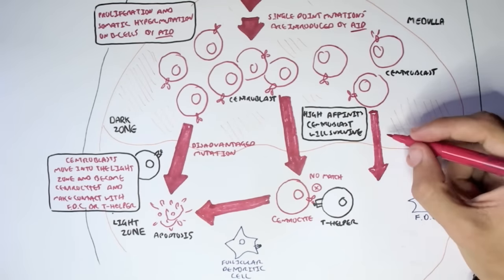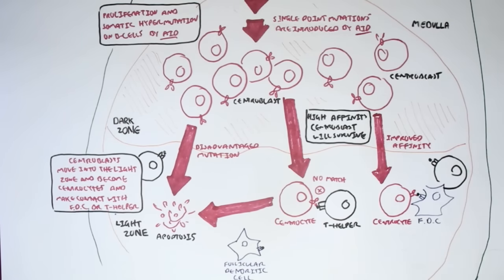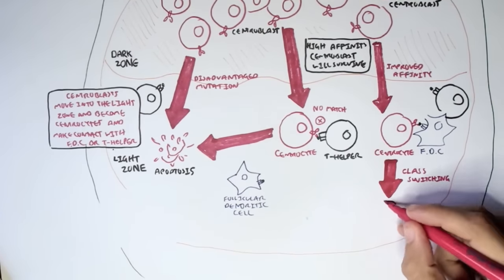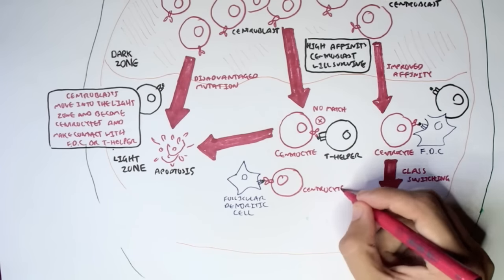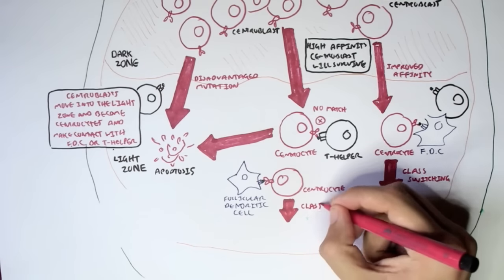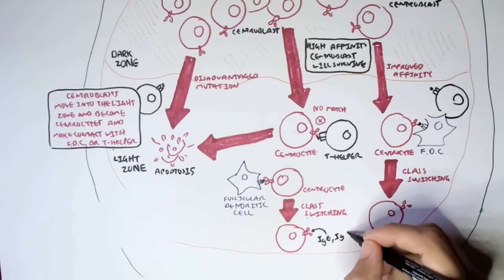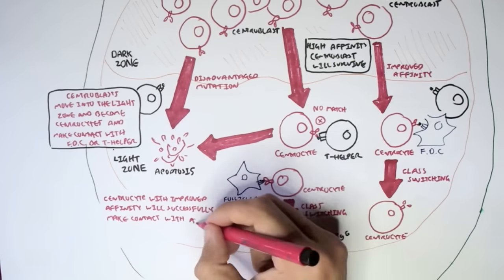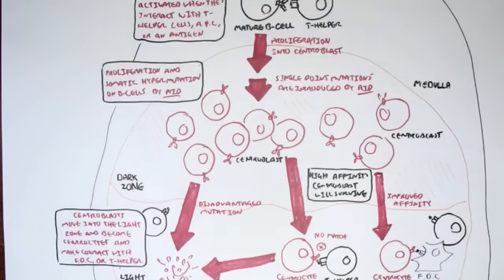However, a centroblast that had improved affinity through hypermutation — the antibody of this centrocyte can recognize the antigen presented by the follicular dendritic cell. Because the centrocyte's antibody recognizes the antigen, the body would want this centrocyte to survive. So the centrocyte will undergo class switching, where its antibody changes class — for example, from IgM to IgA. Similarly, another centrocyte that recognizes the antigen will undergo class switching from IgD or IgM to IgE or IgG. Centrocytes with improved affinity successfully make contact with an antigen and then class switch to IgE, IgG, or IgA.